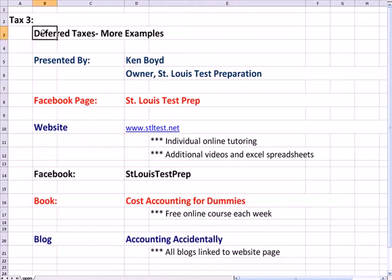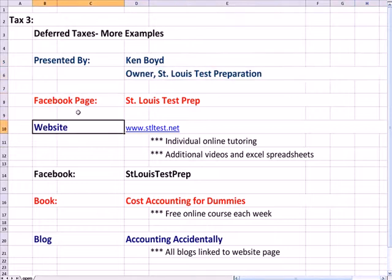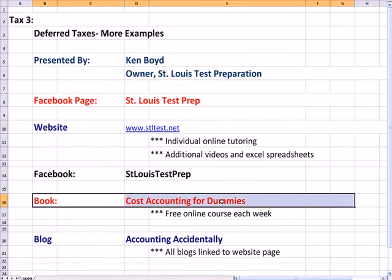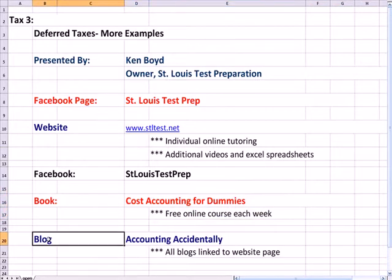Deferred Taxes, three more examples of deferred taxes. This is Ken Boyd, the owner of Stainless Test Preparation. Here's our Facebook page and the website. The book, Cost Accounting for Dummies, is out in just a few days, March 4th of 2013, and the blog is Accounting Accidentally.